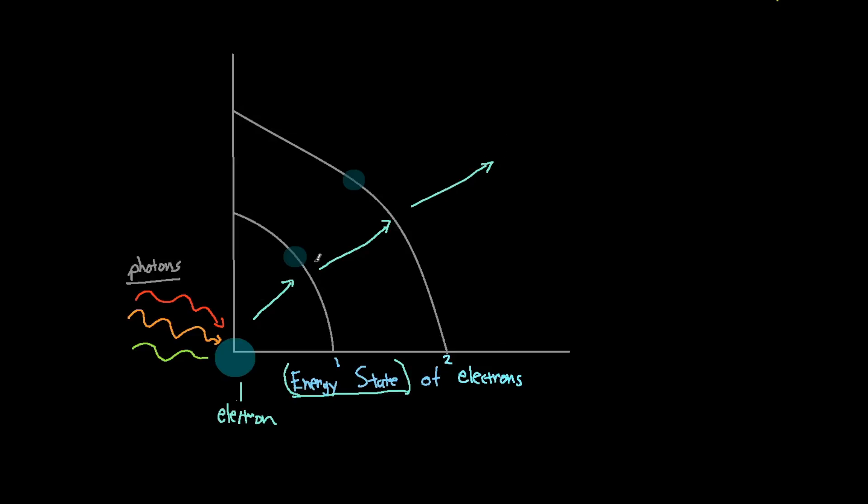But notice how the energy states of my electrons, whether it's at the first energy state or the second energy state, they're at very distinct levels of energy. An electron has a very discrete state. And discrete meaning incremental, meaning that it is not a continuous energy state.